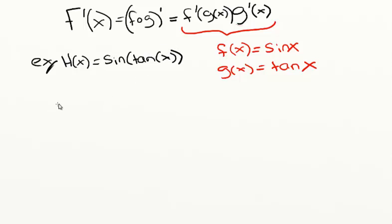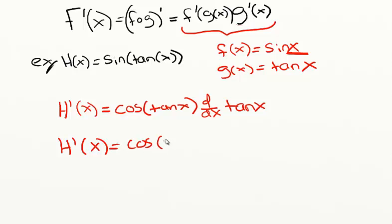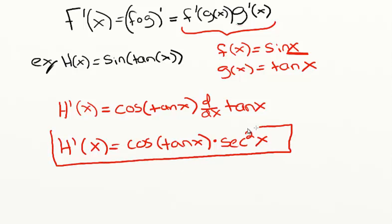So that's where we get the composition of functions. H prime of x is going to be equal to f prime of g of x. Well, f is sine of x, so f prime is cosine. But instead of x, we're going to put g of x there, because we want f prime of g of x. Our g of x is tangent of x. Then we multiply by g prime of x, which is the derivative of tangent of x. That gives us cosine of tangent of x multiplied by secant squared of x, and that is our derivative by the chain rule.